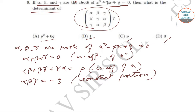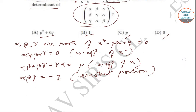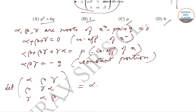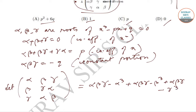Now we have to find the value of the determinant of this matrix — the determinant with rows alpha, beta, gamma; beta, gamma, alpha; and gamma, alpha, beta. When we expand this, we get the expression: alpha·beta·gamma minus alpha³, plus alpha·beta·gamma minus beta³, plus alpha·beta·gamma minus gamma³.